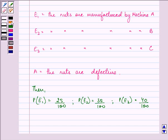Further, we are also given that probability that a defective nut is from machine A is 5%. Probability that a defective nut is from machine B is given to us as 4% and probability that a defective nut is from machine C is 2%.